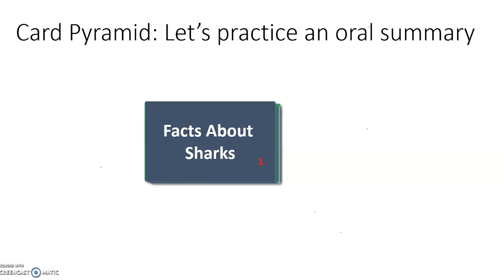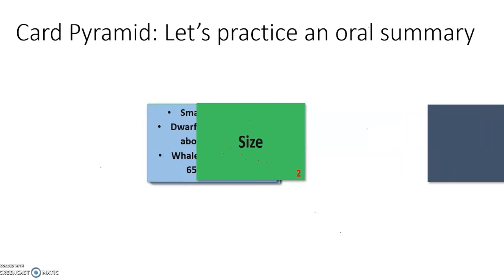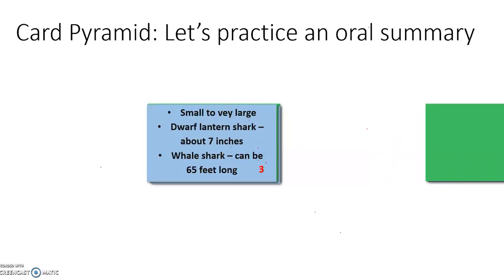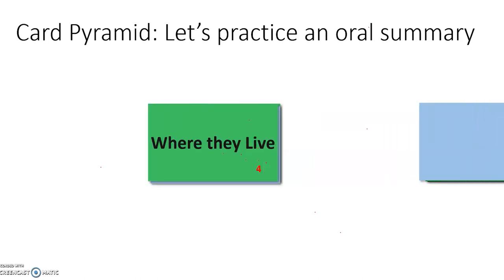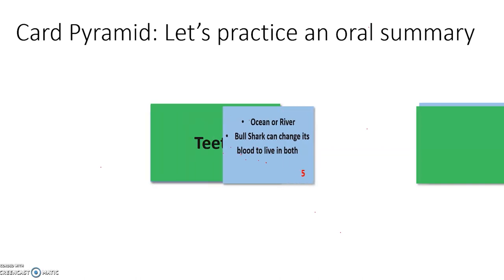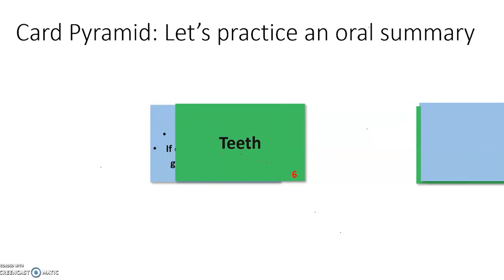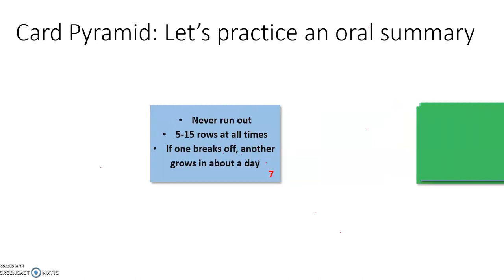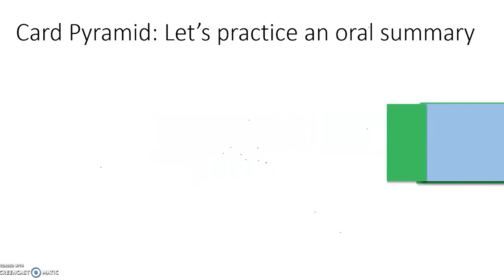Now we want to practice an oral summary, because we know that if we can't say it, we surely can't write it. Maybe we'll get into a written summary after this. Let's practice like we're doing an oral presentation for our class. Today, we're going to talk about facts about sharks. First, the size — sharks can be very small to very large. The dwarf lantern shark is about seven inches long, compared to the whale shark, which can be 65 feet long. Sharks can live in an ocean or a river — the bull shark can change its blood to live in both. Sharks also have very interesting teeth: they never run out, they have five to 15 rows at all times, and if one breaks off, another grows in about a day. And that is our information about sharks.